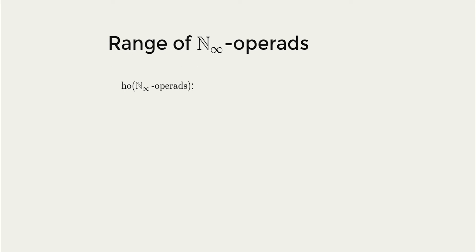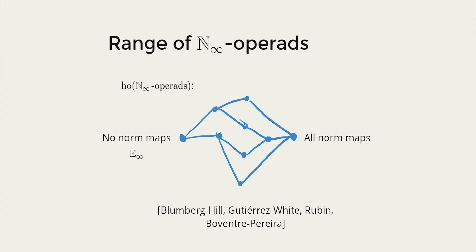Now just to be clear there's more than one kind of N_infinity operad. This is in stark contrast to the E_infinity case where up to homotopy at least there's only one. This comes from the fact that we aren't assuming that our N_infinity operads have to encode every single possible norm map. Instead we have a range where at the lower end we have operads that encode no norm maps which are essentially just E_infinity and at the other end we've got ones that encode everything. In fact the homotopy category turns out to be a finite lattice where each object is completely determined by what possible norm maps it allows.